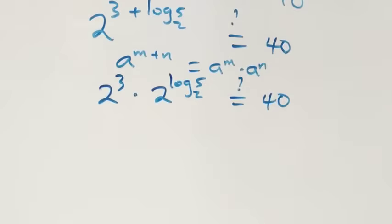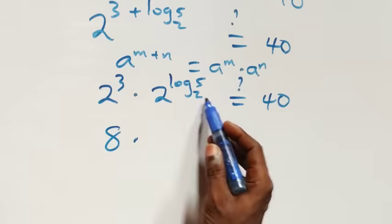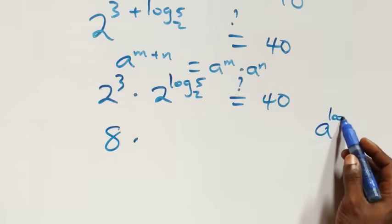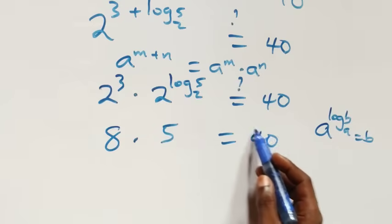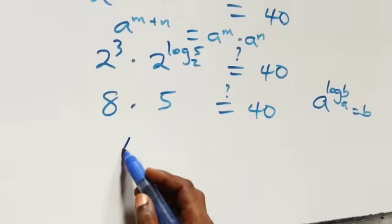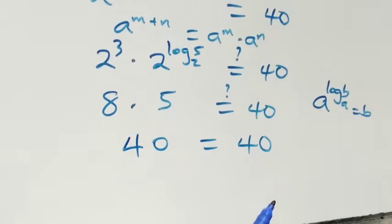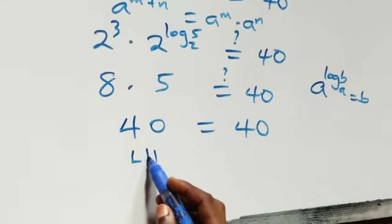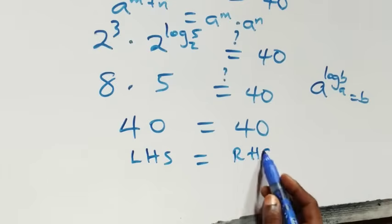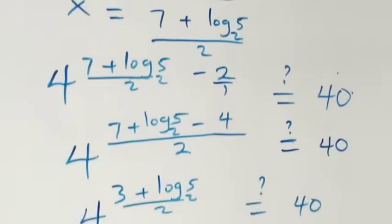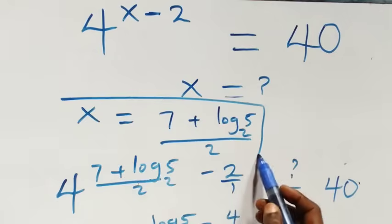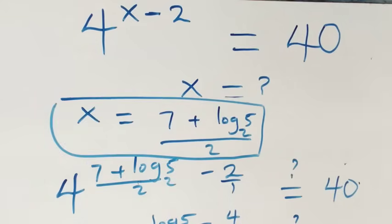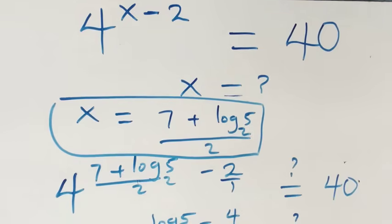We have 7 minus 4 giving us 3, so 4 raised to power (3 plus log 5 base 2) over 2 equals 40. Since 4 is 2 squared, raised to that power gives 2 raised to power 3 plus log 5 base 2, which equals 8 times 5 equals 40. The left-hand side equals the right-hand side, and hence x equals 7 plus log 5 to base 2, all over 2, satisfies the given problem. Thank you for watching.